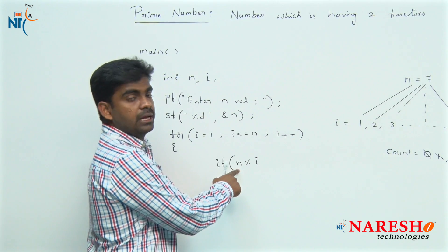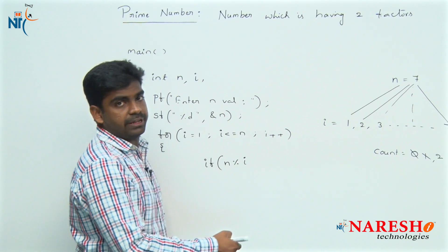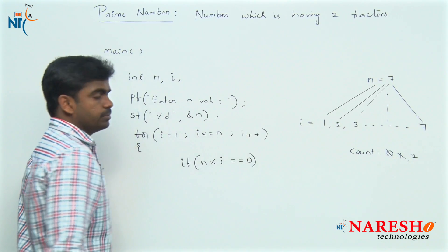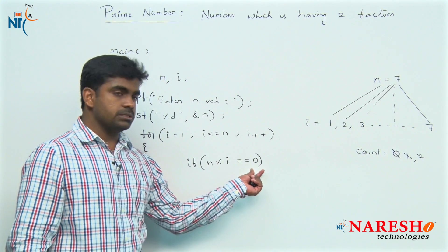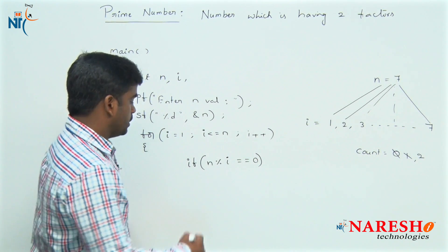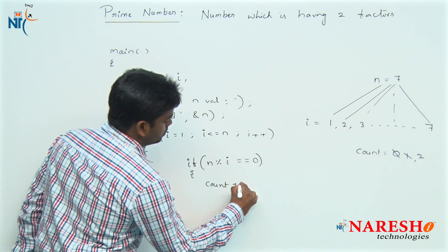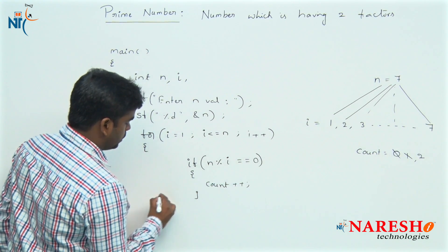N value is 7, I value varies 1, 2, 3, 4, 5, 6, 7. If it is divisible, how can you confirm that? Whenever the reminder is 0, it is divisible. Here inside, we are increasing the count value, count plus plus is the logic.